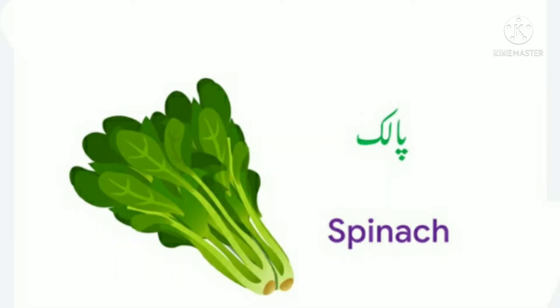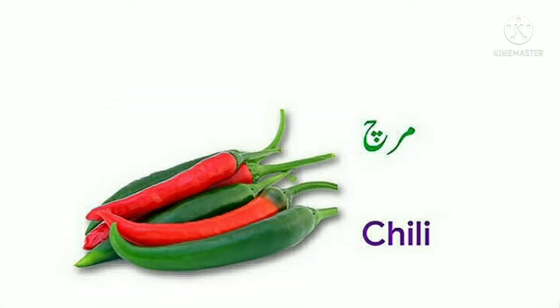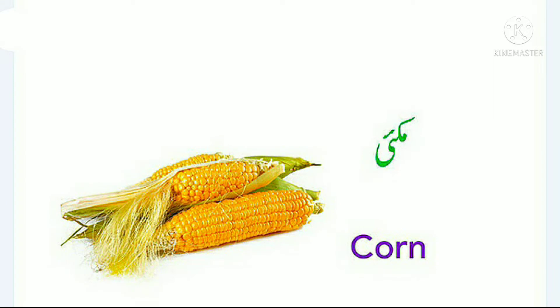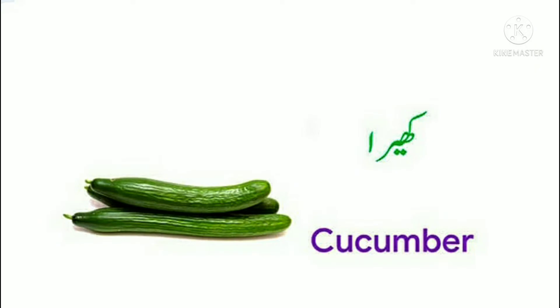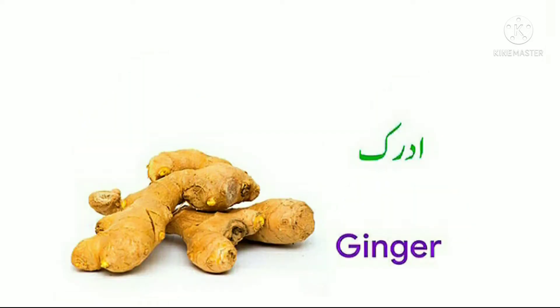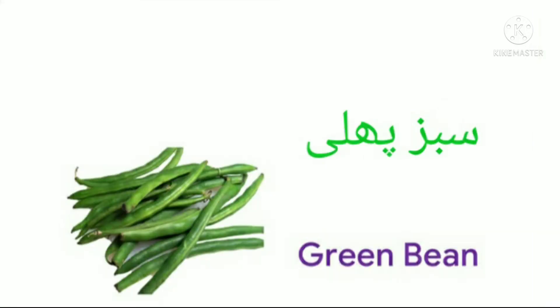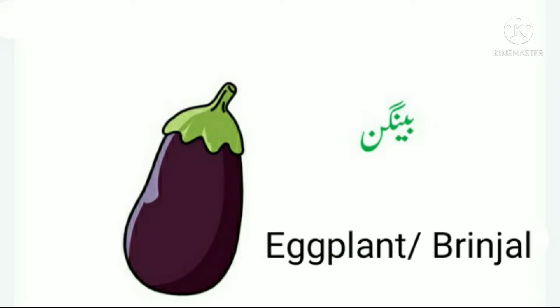Number ten: tomato, tamatar. Number eleven: chili, mirch. Number twelve: corn, makkai. Number thirteen: cucumber, kheera. Number fourteen: garlic, lehsan. Number fifteen: ginger, adrak. Number sixteen: zucchini, tori. Number seventeen: green bean, sabz phalli. Number eighteen: eggplant or brinjal, baingan.